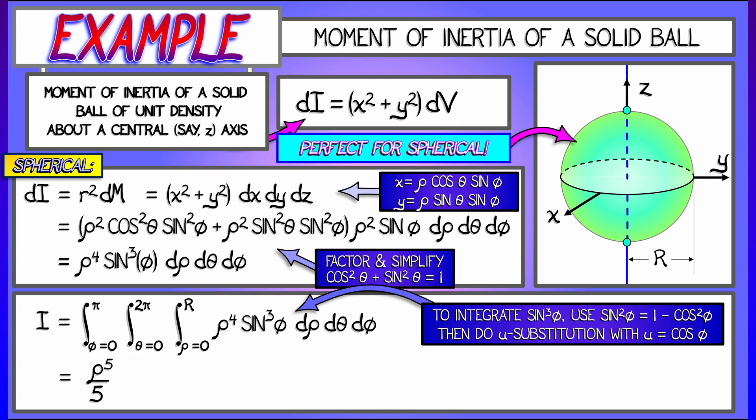When I integrate rho to the fourth, I get rho to the fifth over five from 0 to r. When I integrate d theta, I get theta from 0 to 2 pi. When I integrate sine cubed phi, that's really the integral of quantity one minus cosine squared phi times sine phi.